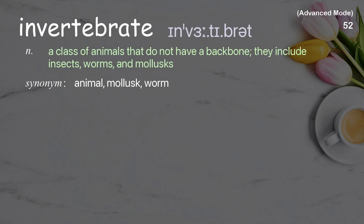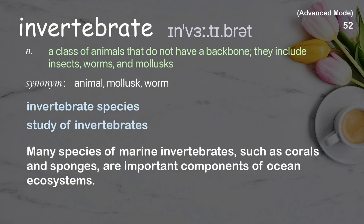Invertebrates: A class of animals that do not have a backbone; they include insects, worms, and mollusks. Examples: invertebrate species, study of invertebrates. Many species of marine invertebrates, such as corals and sponges, are important components of ocean ecosystems.